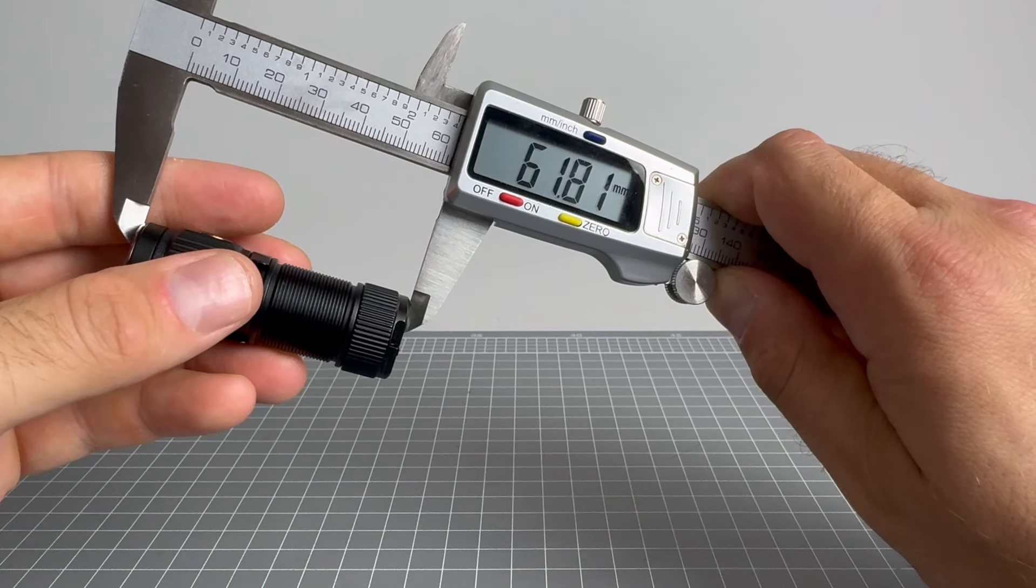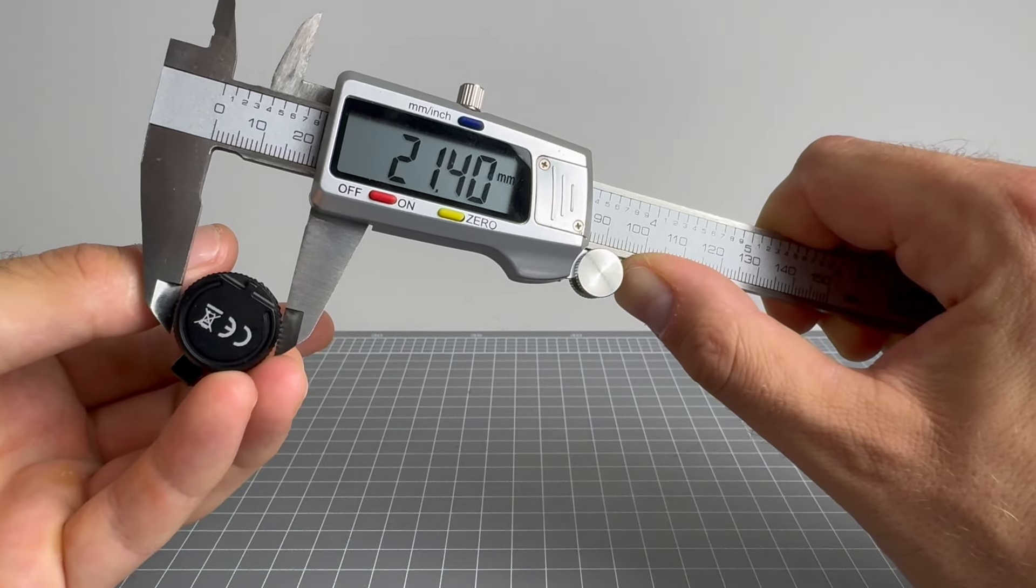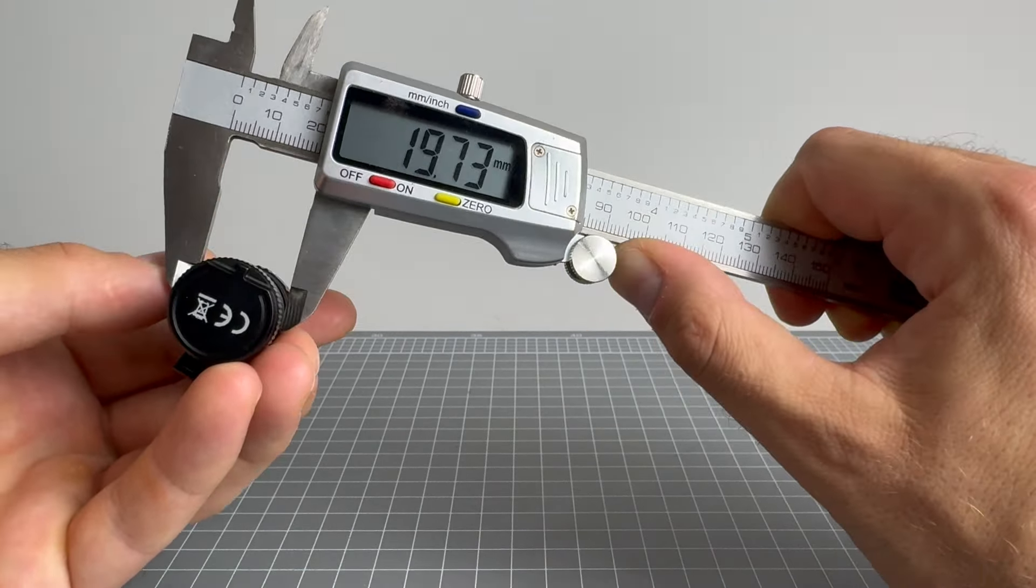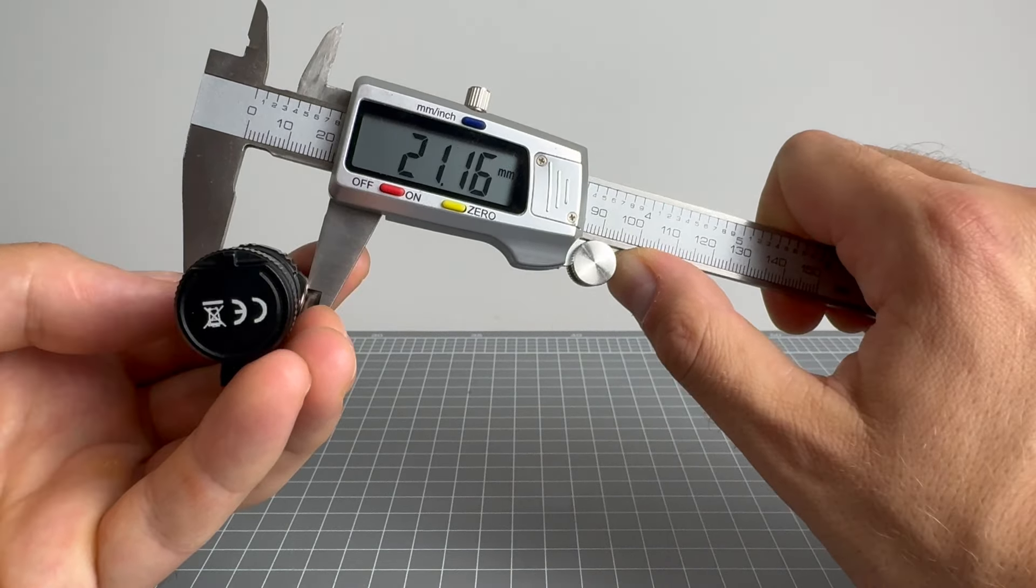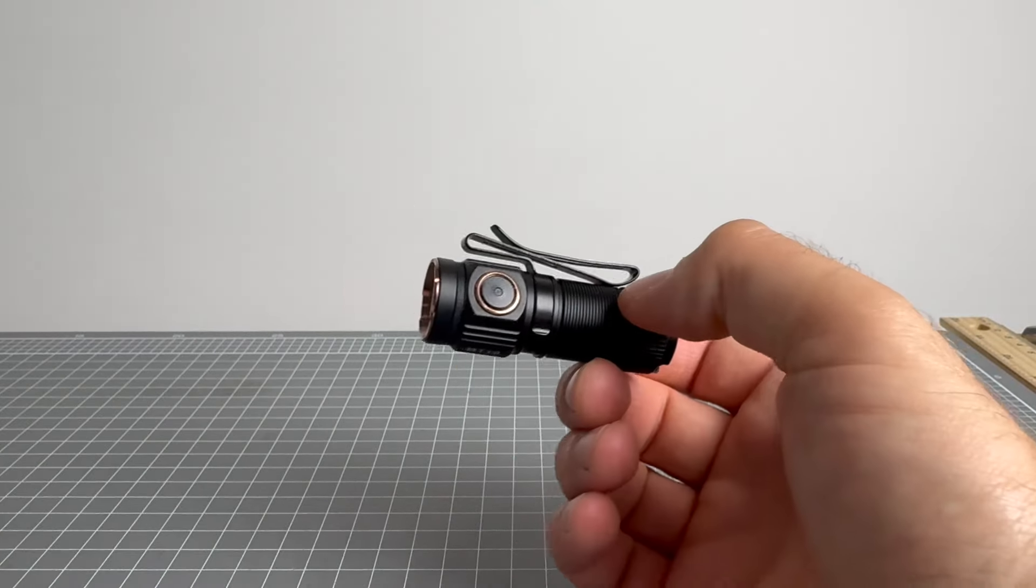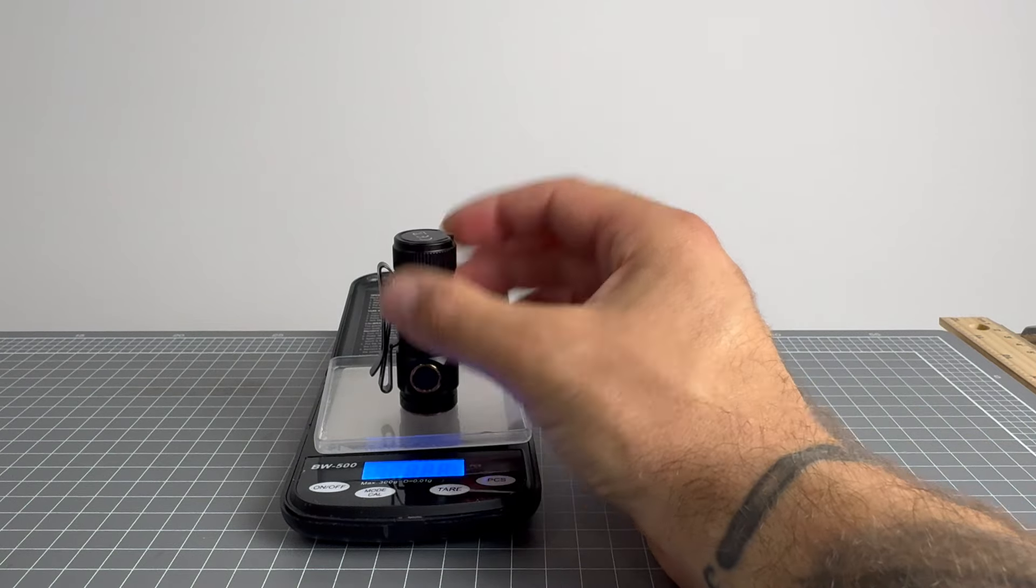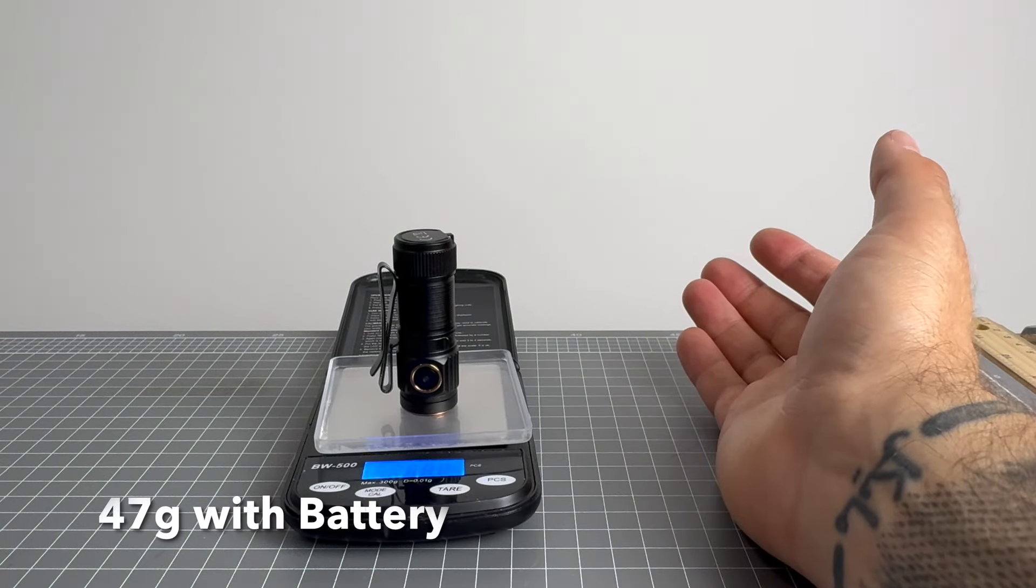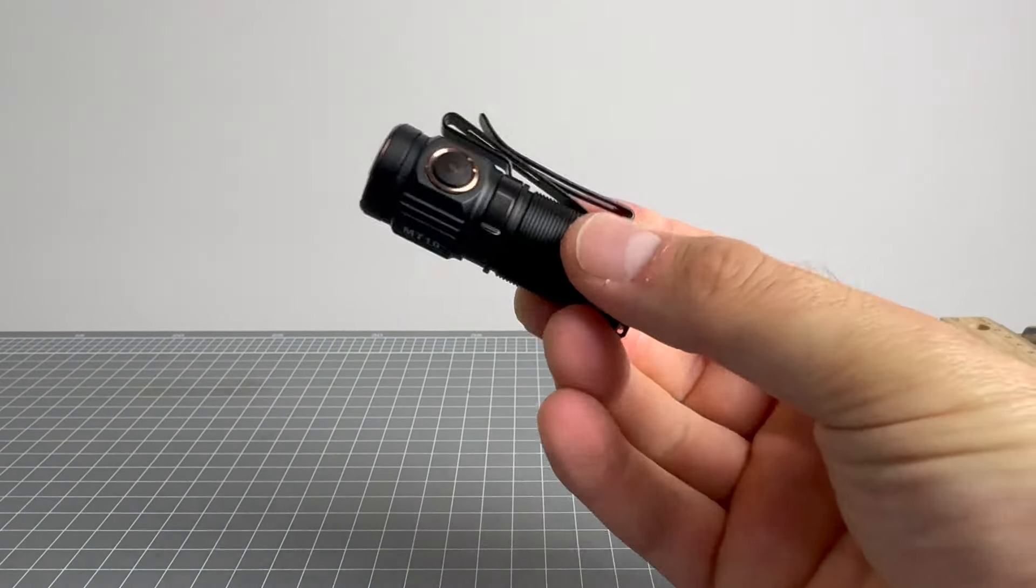Now, the length of this guy, 61.81 millimeters. Width of the tail cap, 21.4 millimeters. Body, all the way into 19.73 millimeters. And the head, 21.16 millimeters. So it is compact. It is definitely compact. The weight with battery and pocket clip both included is 47 grams. Exactly. Nice. So it's a very little guy.